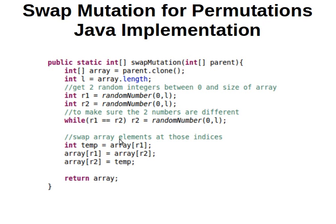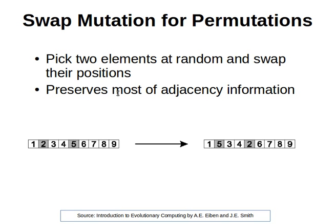After that, we do the standard swap process used in programming: we hold the first variable in a temporary variable, copy the second variable into the first variable, and then copy the temporary variable into the second. Then we return the array. Nice and simple.